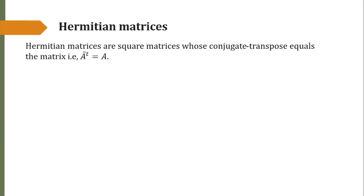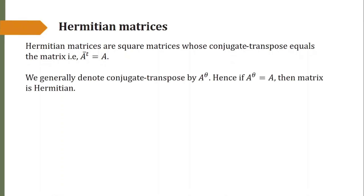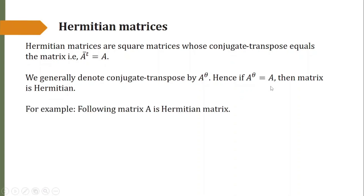Now we see what is a Hermitian matrix. Hermitian matrices are square matrices whose conjugate transpose equals the matrix itself — that is, A equals the transpose of the conjugate of that same matrix. We generally denote the conjugate transpose by A-theta. Hence if A-theta equals A, then we say that the matrix is Hermitian. For example, the following matrix is a Hermitian matrix. Later on, while solving examples, we'll see how to calculate A-theta.